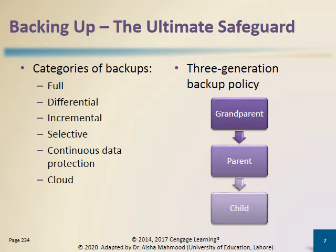Business and home users can perform four types of backup: full, differential, incremental, or selective. A fifth type, continuous data protection, is often used only by large enterprises to back up data to an in-house network storage device. Cloud backup services, a sixth option, are providing continuous data protection capabilities at a lower cost. Some users implement a three-generation backup policy preserving three copies: the grandparent is the oldest copy, the parent is the second oldest, and the child is the most recent. When a new backup is performed, the child becomes the parent, the parent becomes the grandparent, and the grandparent's media may be erased or reused.